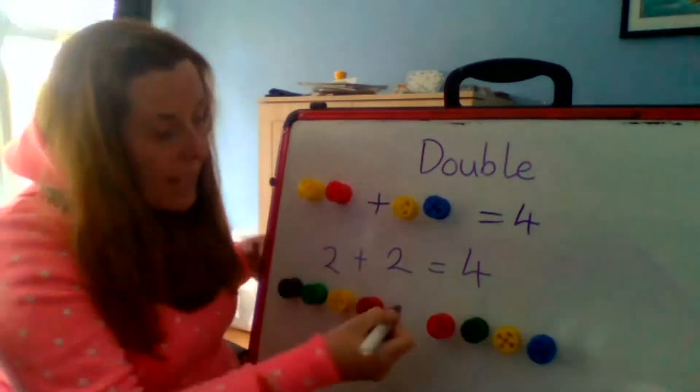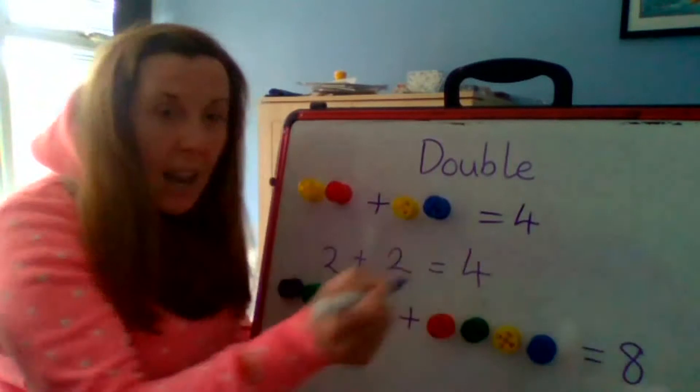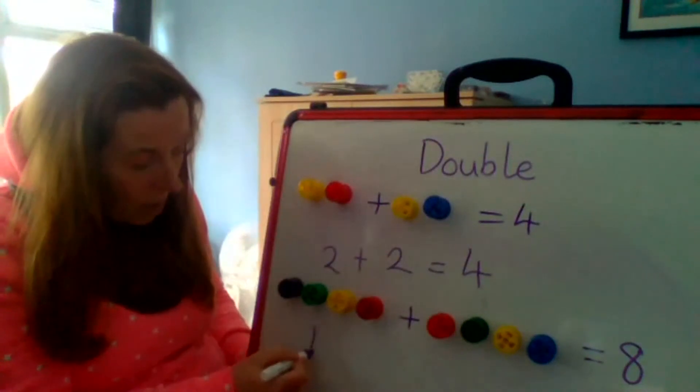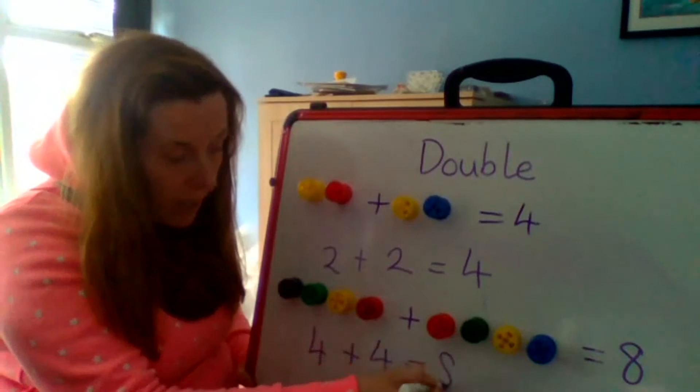So if I had this here, I add it here. So it's four, add four and it equals eight. And underneath I will write four, add four equals eight.